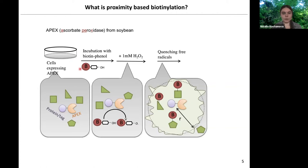How APEX2 labeling works in cells is the following: we take our favorite protein and fuse it to APEX2, we express the construct in the cells, we treat the cells with biotin-phenol, then for a short time with hydrogen peroxide, and then remove the free radicals with a specific quenching solution. During this short hydrogen peroxide treatment, APEX2 produces biotin-phenoxyl radicals from biotin-phenol, and those radicals fuse to surface-exposed tyrosines and other electron-rich amino acids in proximity to the protein, which has been estimated to be around 20 nanometers.